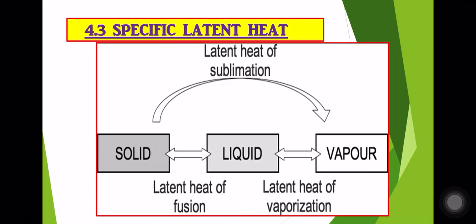Latent heat refers to the amount of heat energy needed by any substance when there is a change in the state of matter. When an object goes through changes in state of matter, it will absorb or release heat energy. That quantity of heat energy is called latent heat. There are three types: latent heat of fusion, latent heat of vaporization, and latent heat of sublimation.